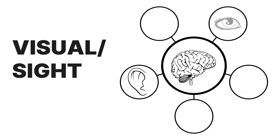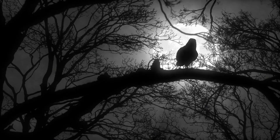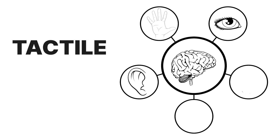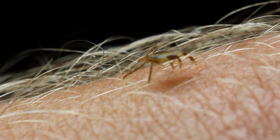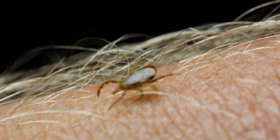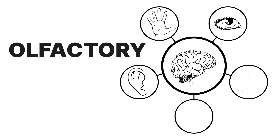Visual or sight hallucinations, on the other hand, involve seeing things that aren't real, like objects, shapes, people, animals, or lights. For tactile hallucinations, you feel touch on your body or movement in your body that's not real. It could be feelings like bugs crawling on your skin, or your internal organs moving around.